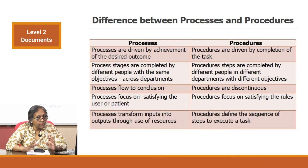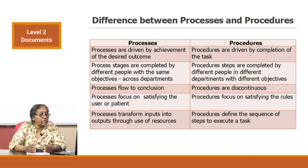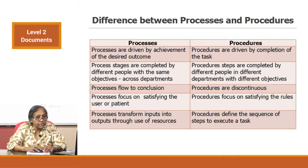To look at the difference on a table: processes are driven by the achievement of the desired outcome — that desired outcome will happen only if they are driven by the completion of the task in the correct manner. Procedures are the part of documentation which define the task in a stepwise, correct manner. Process stages are completed by different people with the same objectives and across departments.